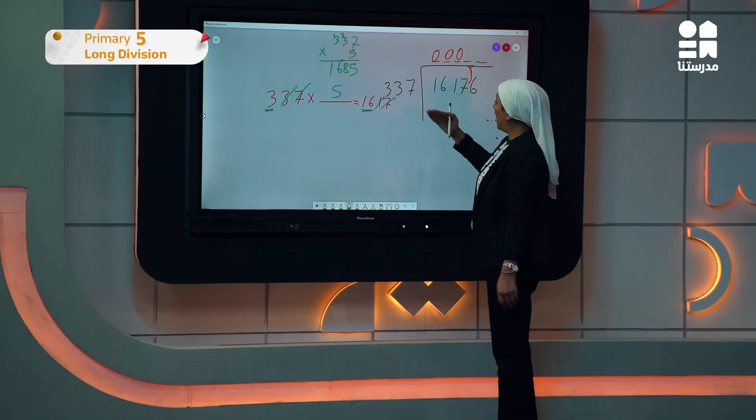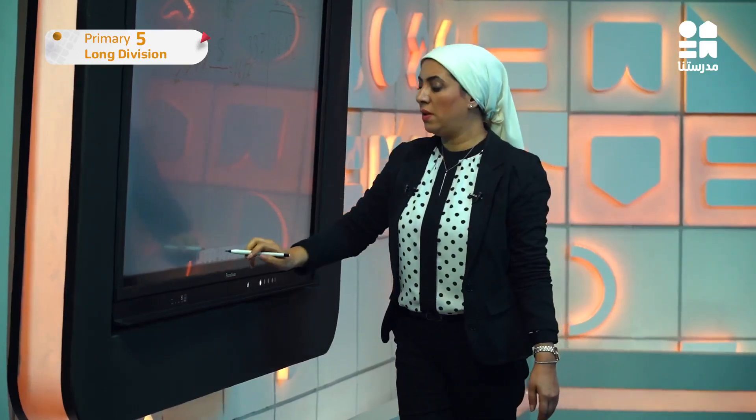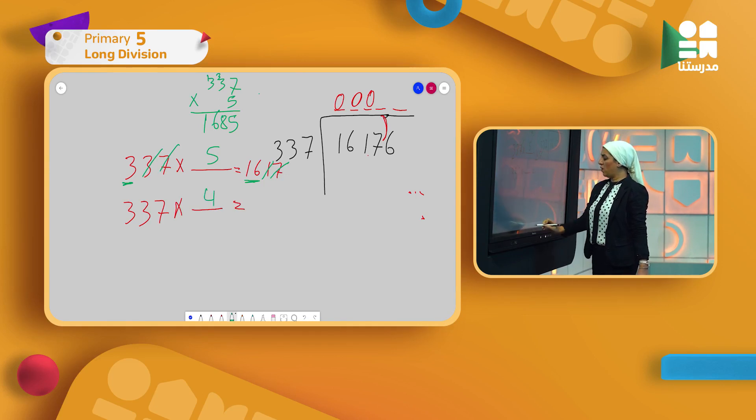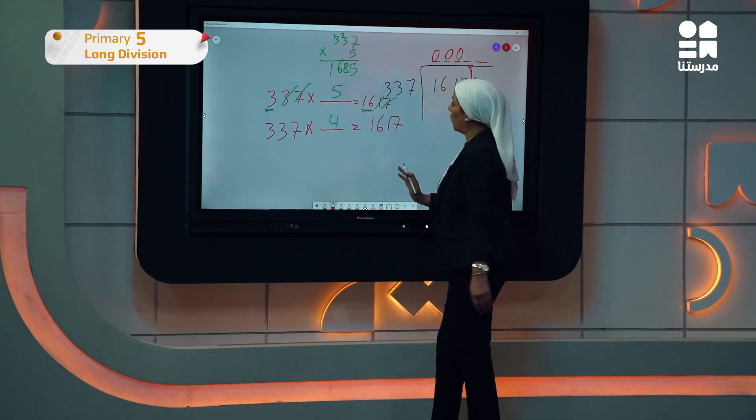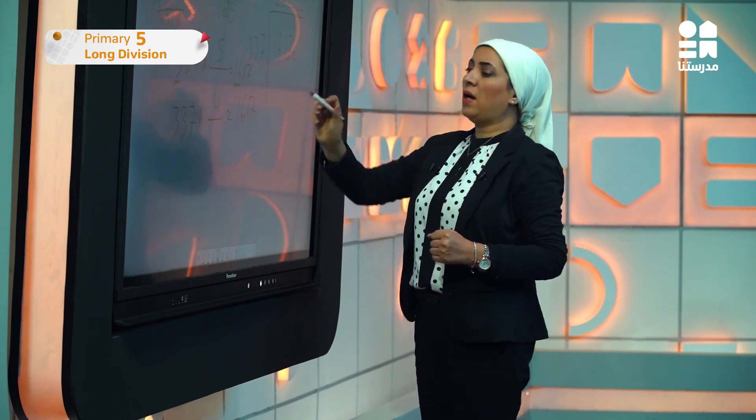Is 1685 equal to or smaller than 1617 so I can do subtraction? No, so 5 doesn't work. Let me try smaller, let's take 4. 337 times 4: 4 times 7 is 28, 8 and I carry 2. 4 times 3 is 12, plus 2 is 14, 4 and carry 1. 4 times 3 is 12 plus 1 is 13. Answer is 1348. Is it equal to or smaller than 1617? Yes, I will use 4.